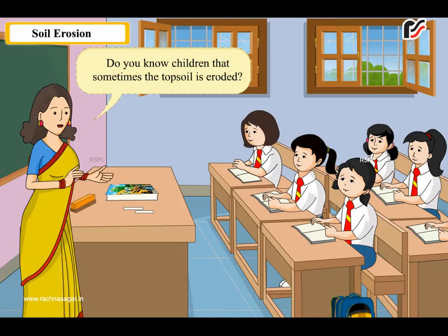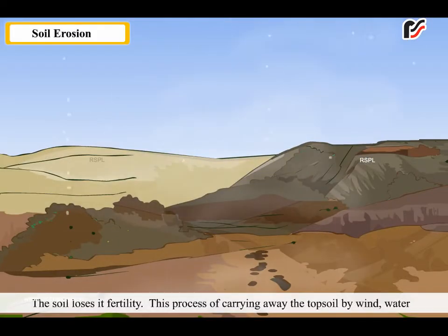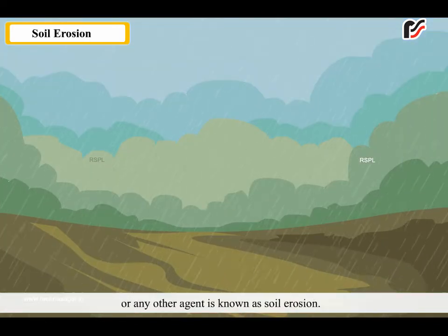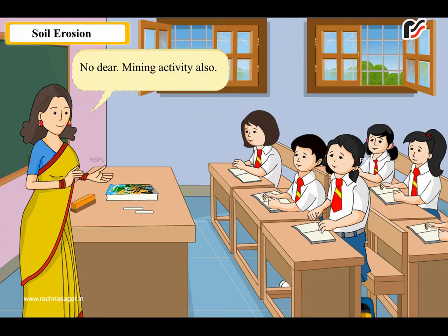Do you know, children, that sometimes the topsoil is eroded? The soil loses its fertility. This process of carrying away the topsoil by wind, water or any other agent is known as soil erosion. Ma'am, are these the only reasons for soil erosion? No, dear. Mining activity also causes soil erosion.